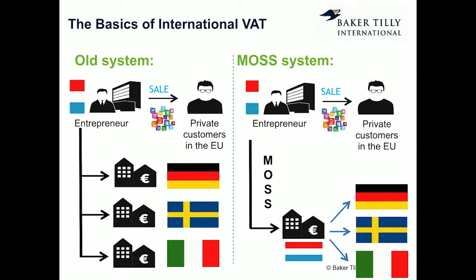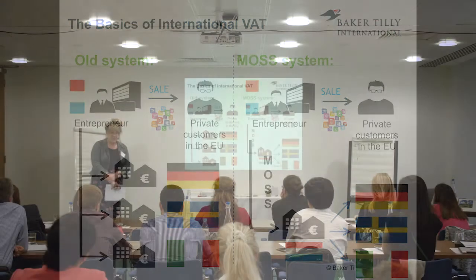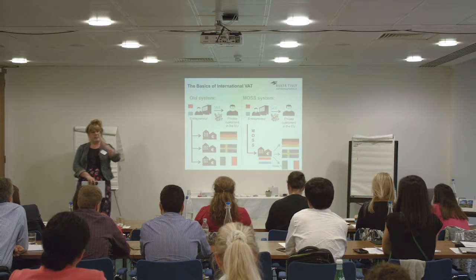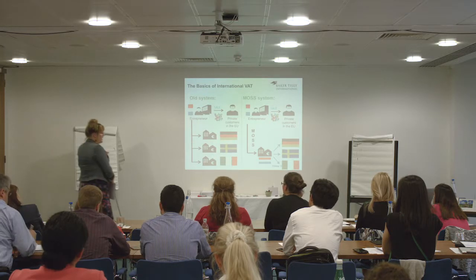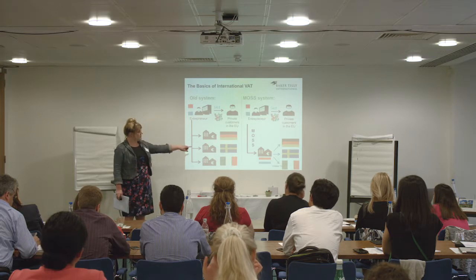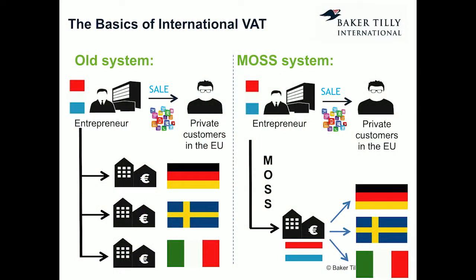The old EU system required registering and filing VAT returns in every country where you had customers. To simplify this, the EU introduced the One-Stop-Shop (MOS) system. You register in one EU country — say, the Netherlands — charge all the local VAT rates to your customers, file one MOS return, and pay all that VAT to the Dutch tax authorities. They then distribute the VAT to each respective country.